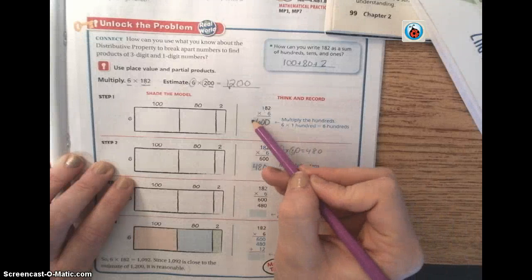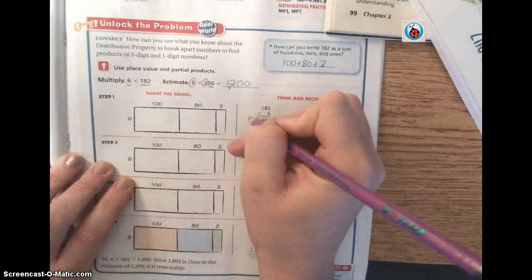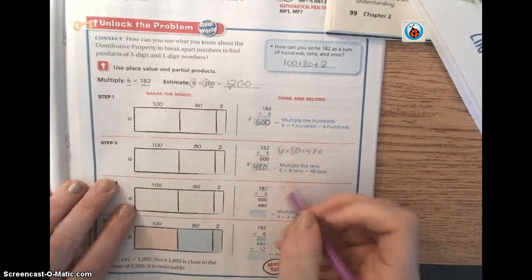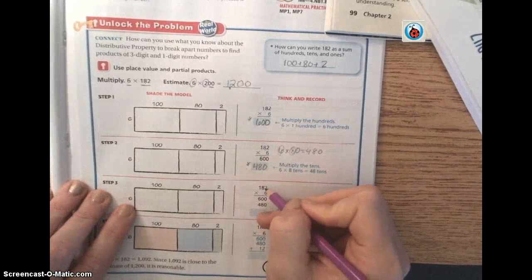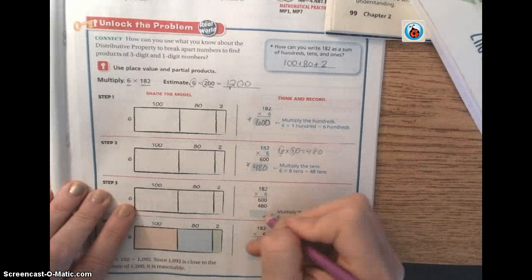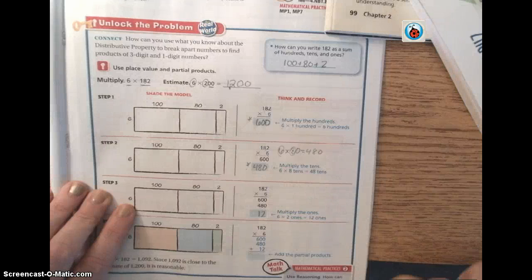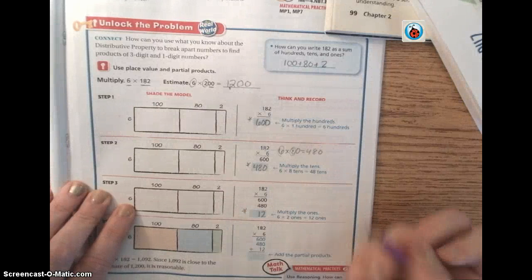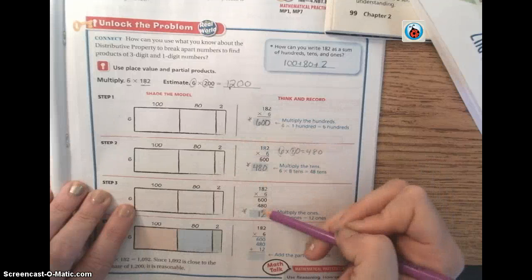So now we have 600 and 480. And we're going to add those two numbers together, but we still have to go to our ones place. So let's go down to our ones place. 6 times 2 is 12.